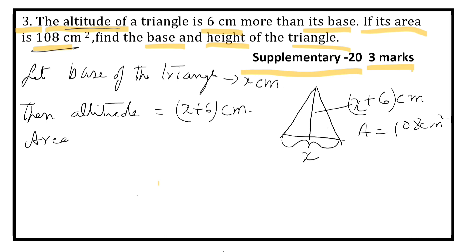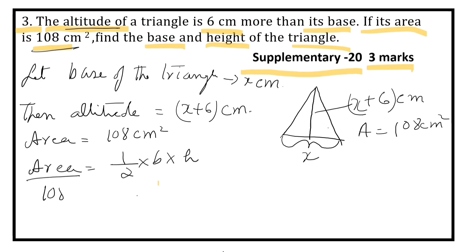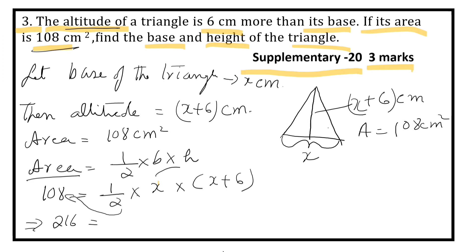We know that area of a triangle is equal to half into base into altitude or height. Area is given as 108. So 108 is equal to half into base X into height X plus 6. Transposing 2 to the other side gives 2 into 108 equals 216. Multiplying gives X square plus 6X. Writing in standard form: X square plus 6X minus 216 equals 0.